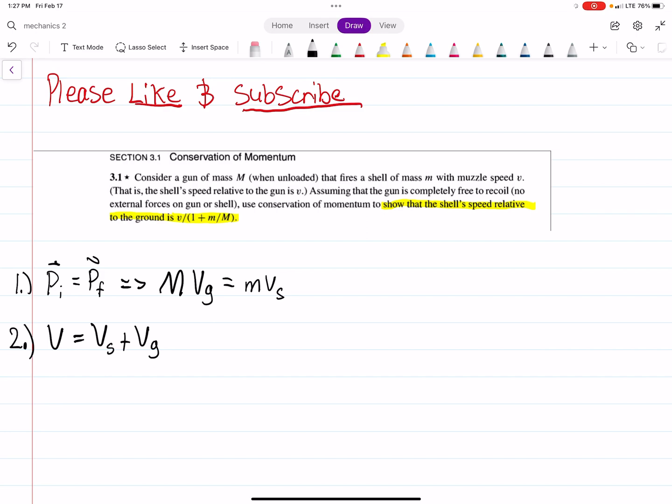So if we take equation two and multiply it by m, we have mV = mvs + mvg. If we compare that to equation one and set them equal to each other,